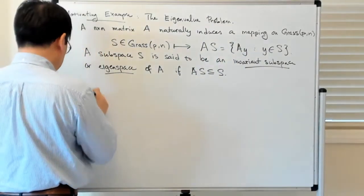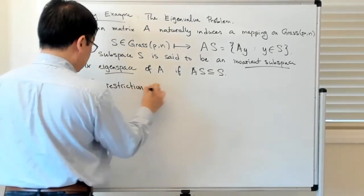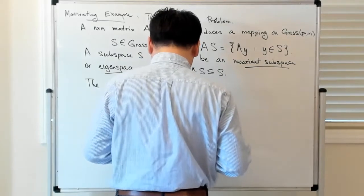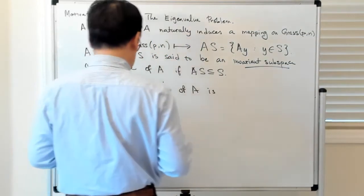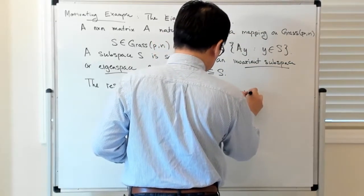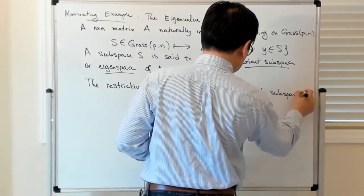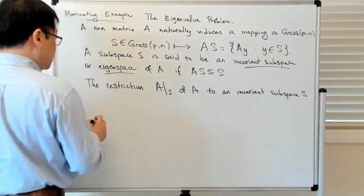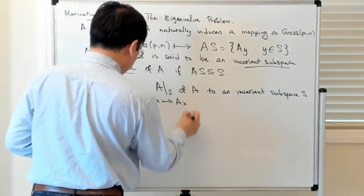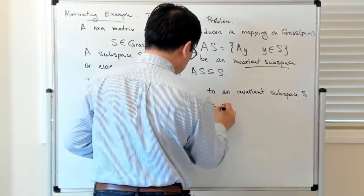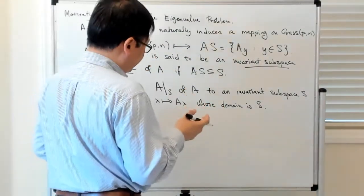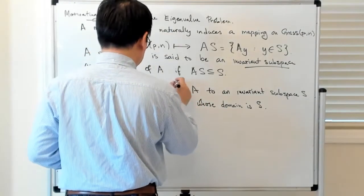So then you can talk about the restriction A restricted to S. When S is invariant, this is the operator where x gets mapped to A of x, whose domain is S. And because S is an invariant subspace, this is a map from S to S.